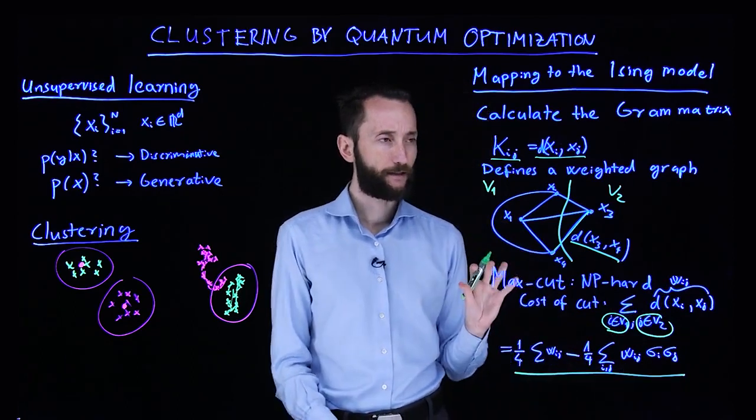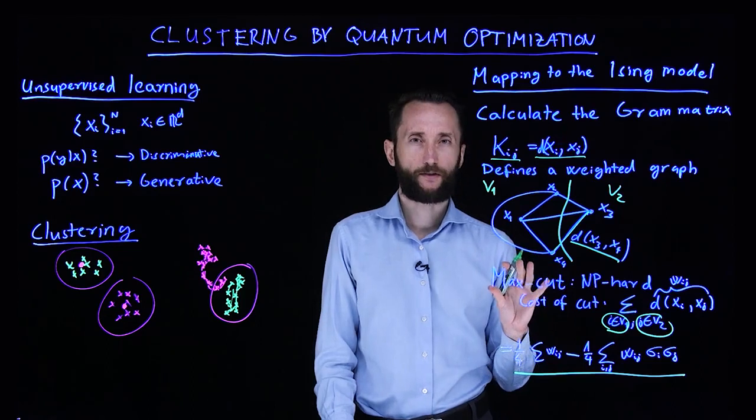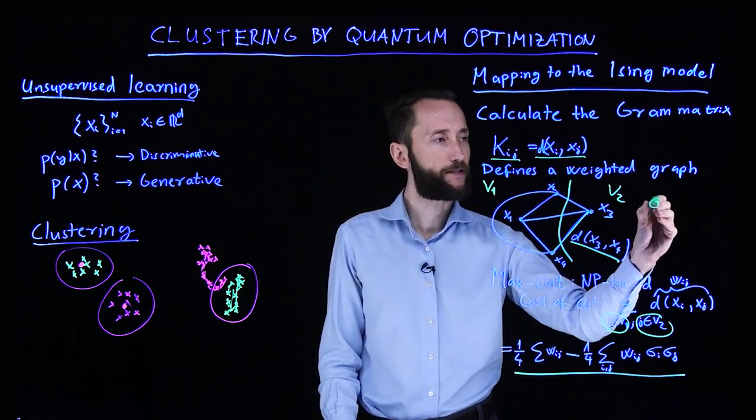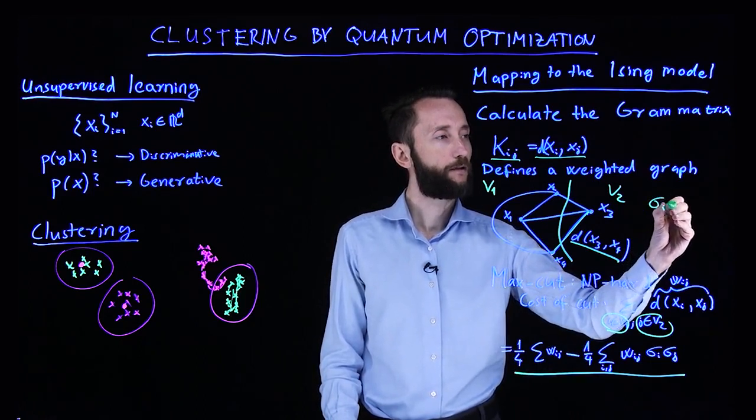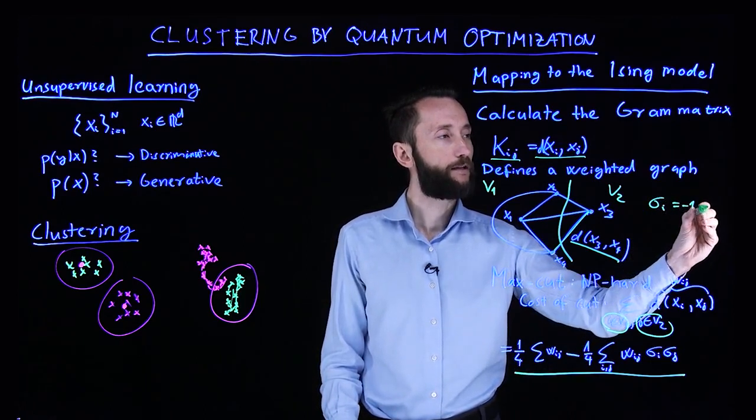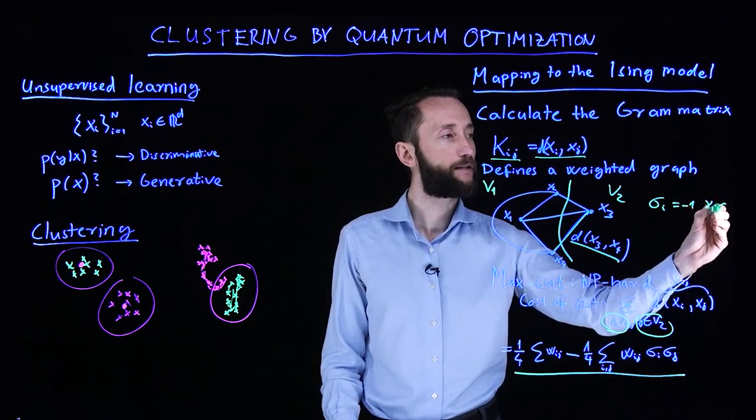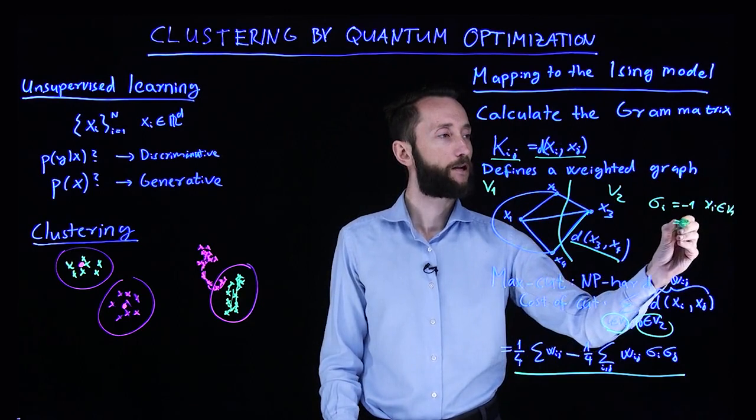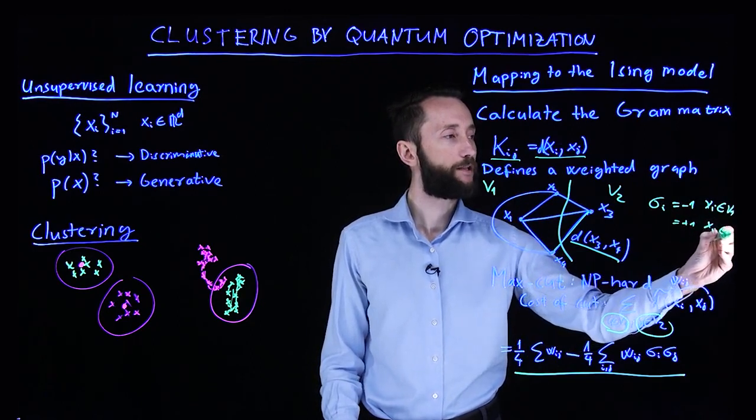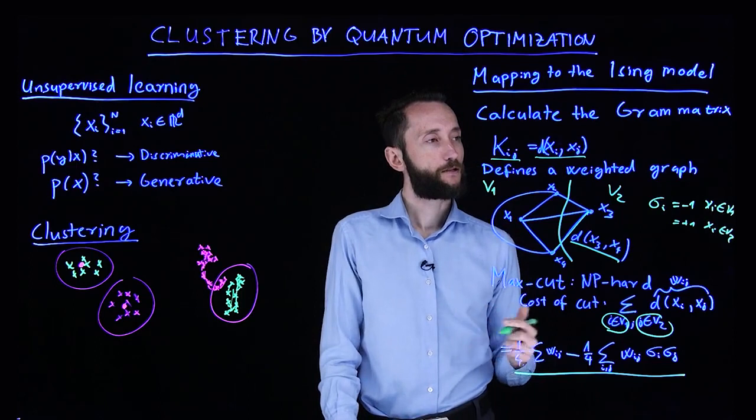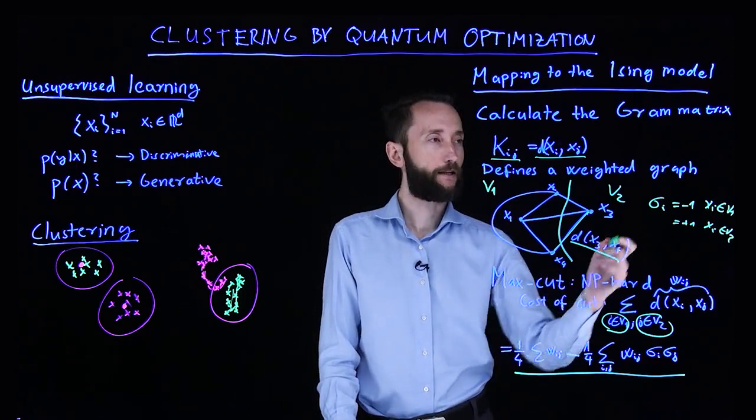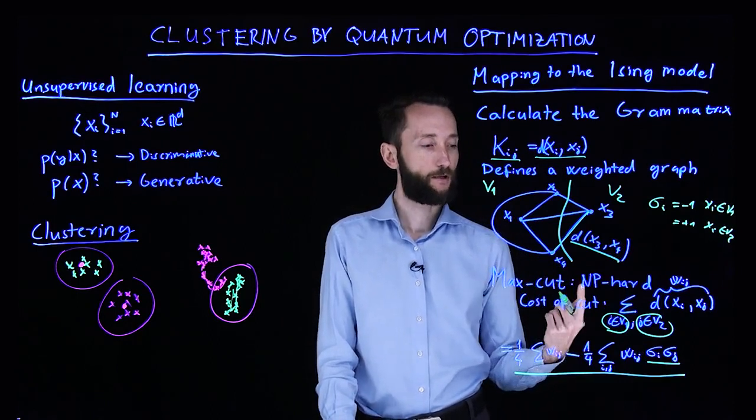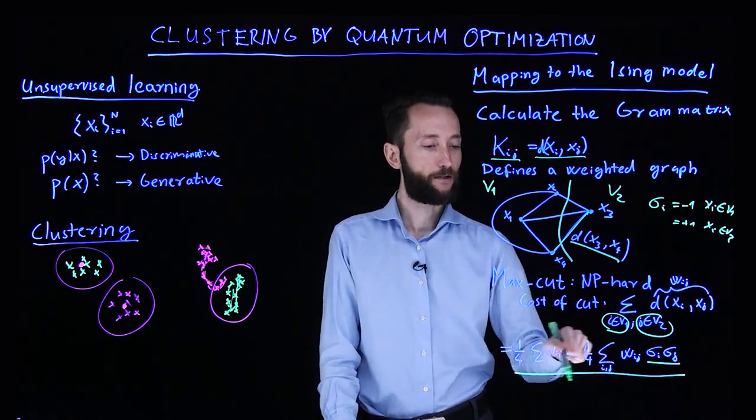Imagine that you have values on the same side of the graph. Let's define a sigma i value as minus one if the corresponding xi point is in V1, on this side of the partition. And it's going to be plus one if the point is in V2. If you have something on the same side and you calculate the product as I did here, that's going to give you a plus one. That's going to cancel out in this equation. It's actually not going to matter at all.